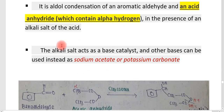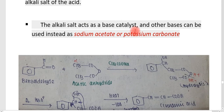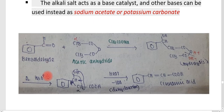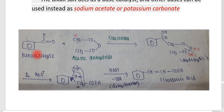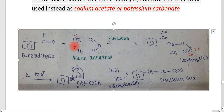The reaction takes place in the presence of an alkali salt of the acid, which acts as a base catalyst. Sodium acetate is mainly used, although potassium carbonate or other bases can also be used. The example given here is benzaldehyde reacting with acetic anhydride — the aromatic aldehyde and the anhydride — with acetic anhydride having three alpha hydrogens attached to the alpha carbon. The base used is sodium acetate.